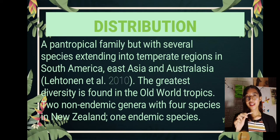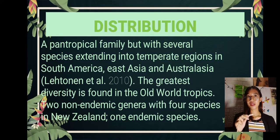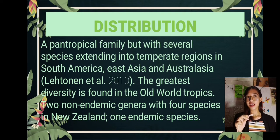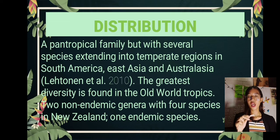The distribution of the family Linsaeaceae is that it is a pan-tropical family, but with several species extending into temperate regions in South America, East Asia, and Australasia. According to Lehtonen et al. 2010, the greatest diversity is found in the Old World tropics. There are two non-endemic genera with four species in New Zealand, and one endemic species.